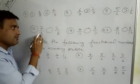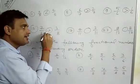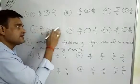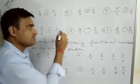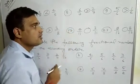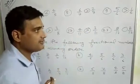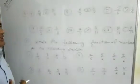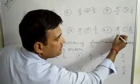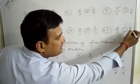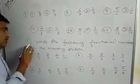In question 9, 5 by 6 is greater than 1 by 6 because 5 is greater than 1. In question 10, 7 by 8 is greater than 3 by 8 because 7 is greater than 3. In question 17, 4 by 11 is greater than 3 by 11. In question 23, 9 by 12 is greater than 8 by 12 because 9 is greater than 8.